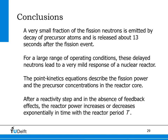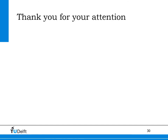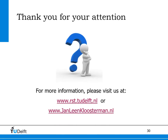We will finalize this lecture with a number of conclusions. First, a very small fraction of the fission neutrons is emitted by decay of precursor atoms, and this fraction is released about 13 seconds after the fission event. For a large range of operating conditions, these delayed neutrons lead to a very mild response of a nuclear reactor. The point kinetics equations derived here describe the fission power and the precursor concentrations in the reactor core. After a reactivity step, and in the absence of feedback effects, the reactor power increases or decreases exponentially in time with the reactor period T. In reality, feedback effects will ensure that the reactor power stabilizes again. Thank you for your attention, and if you have further questions, please contact us at one of the websites shown here.